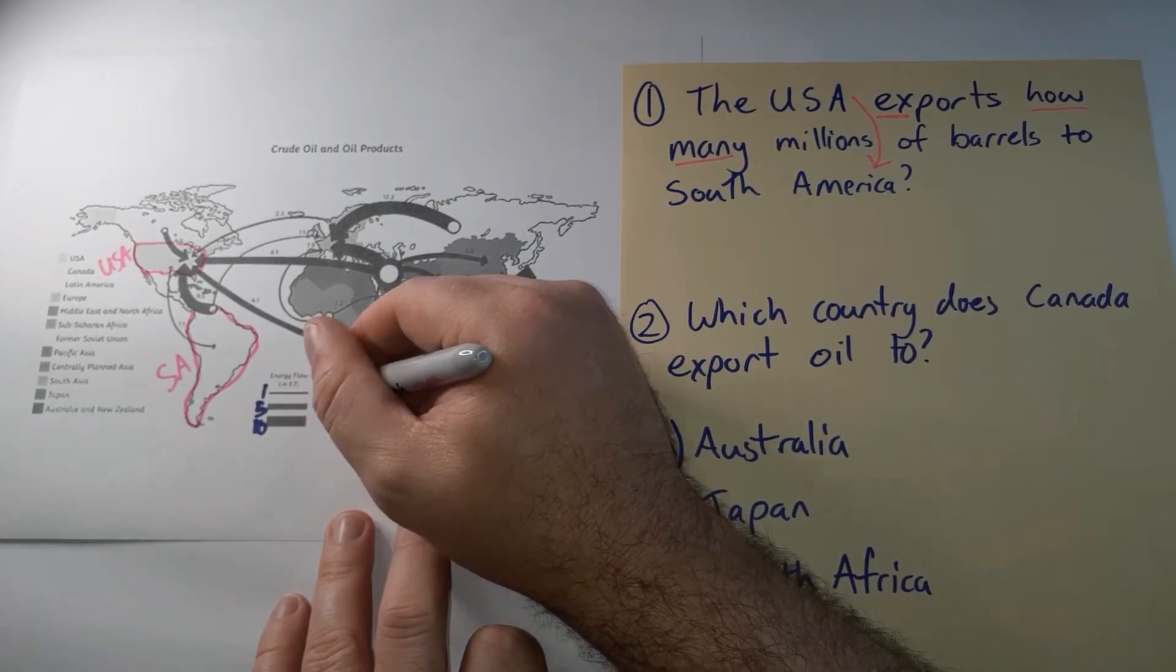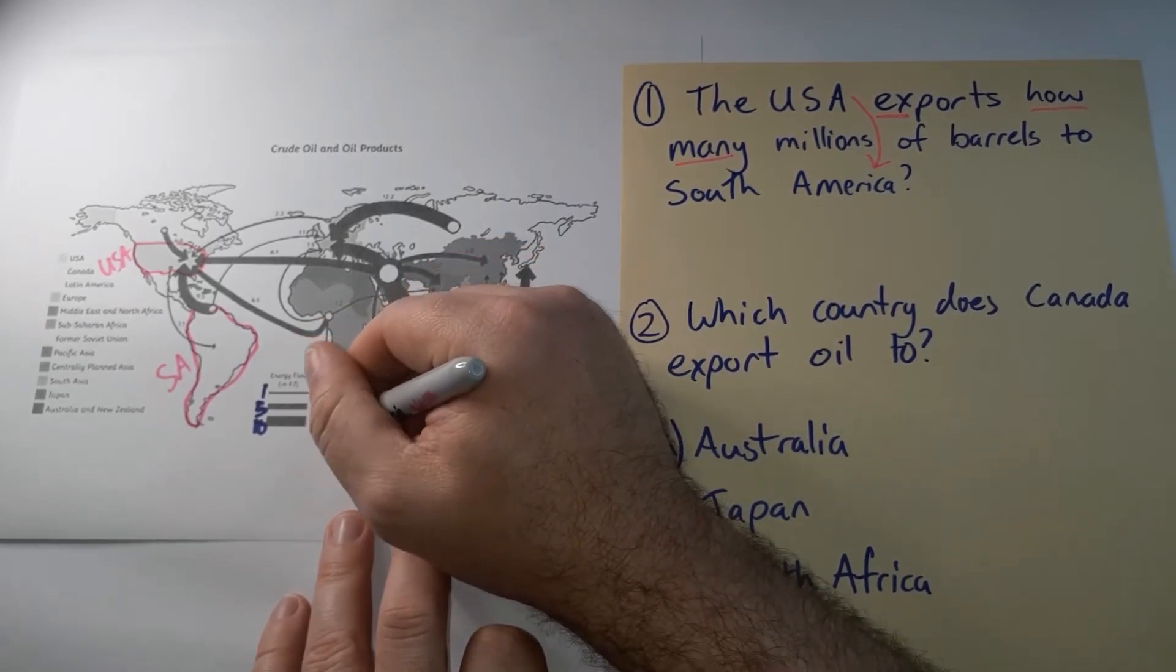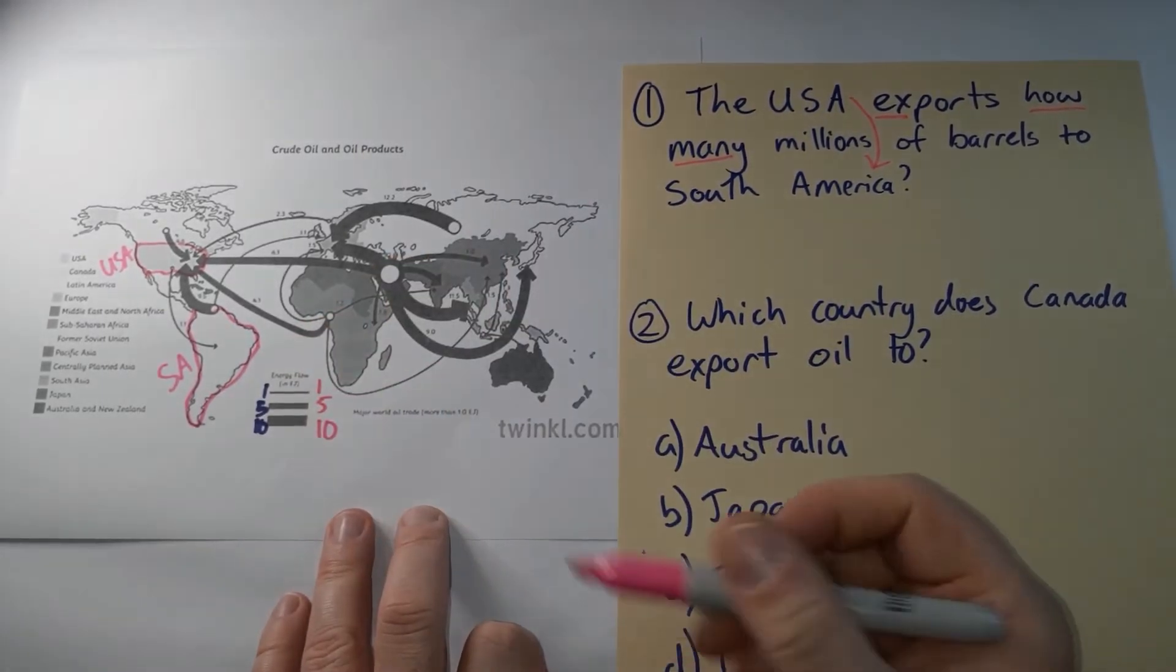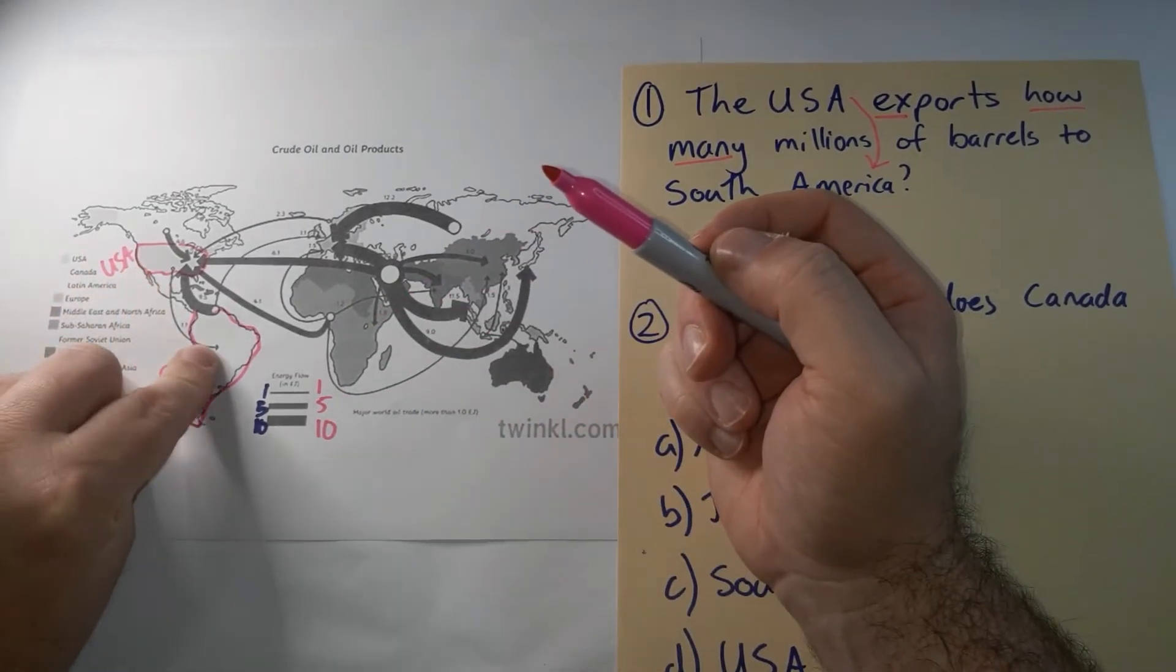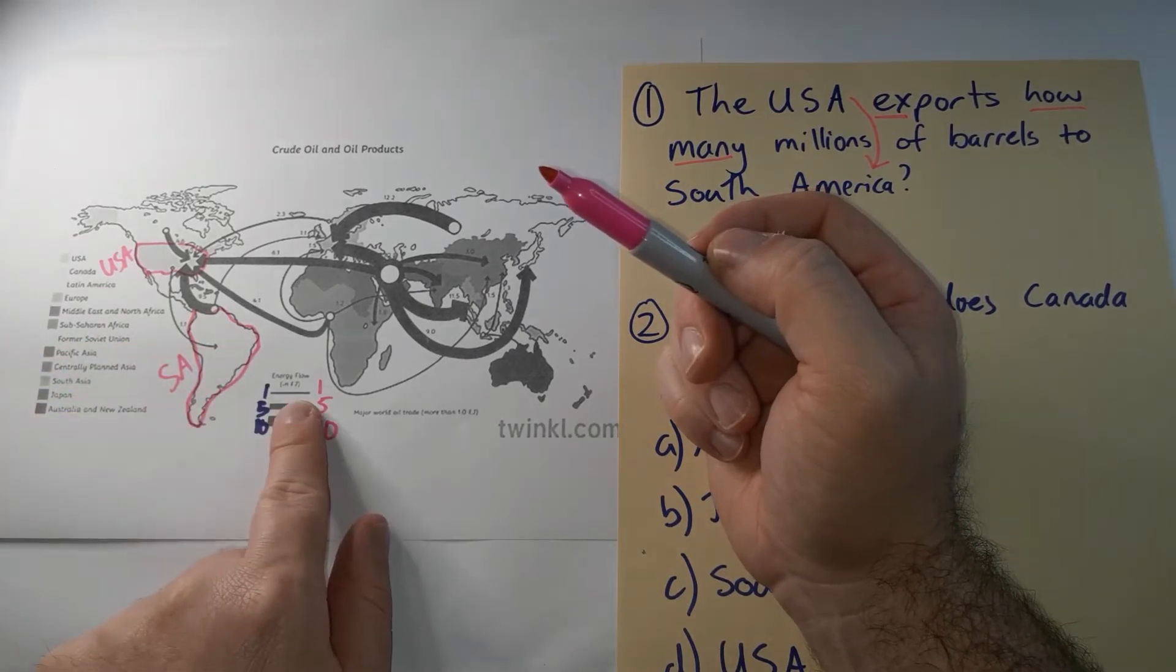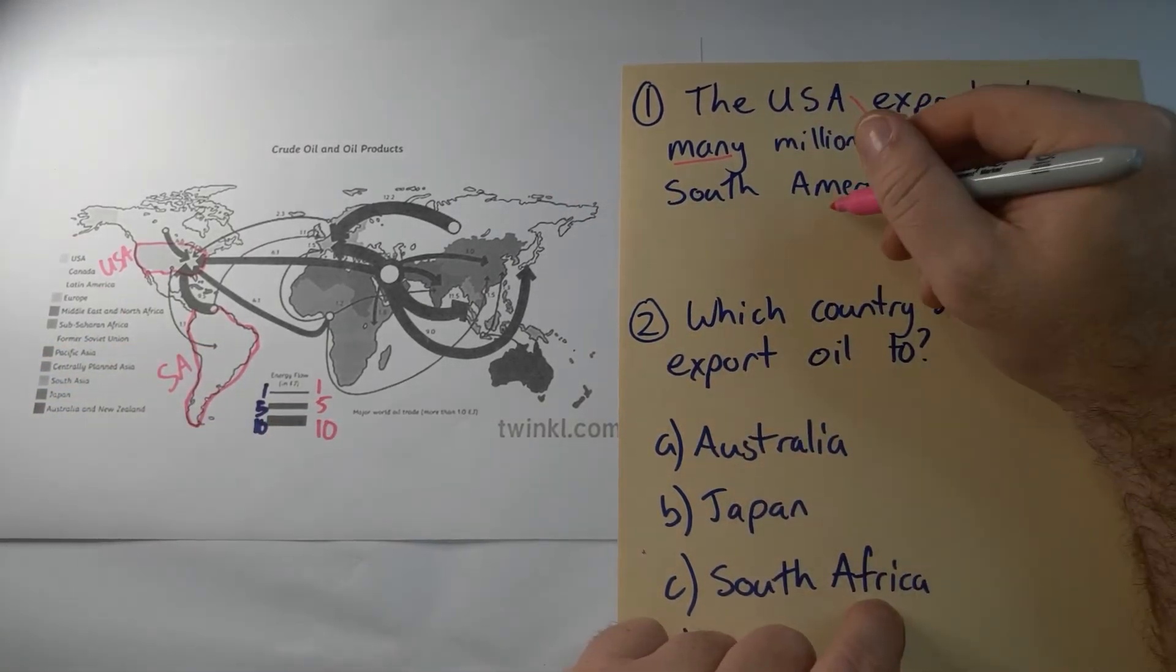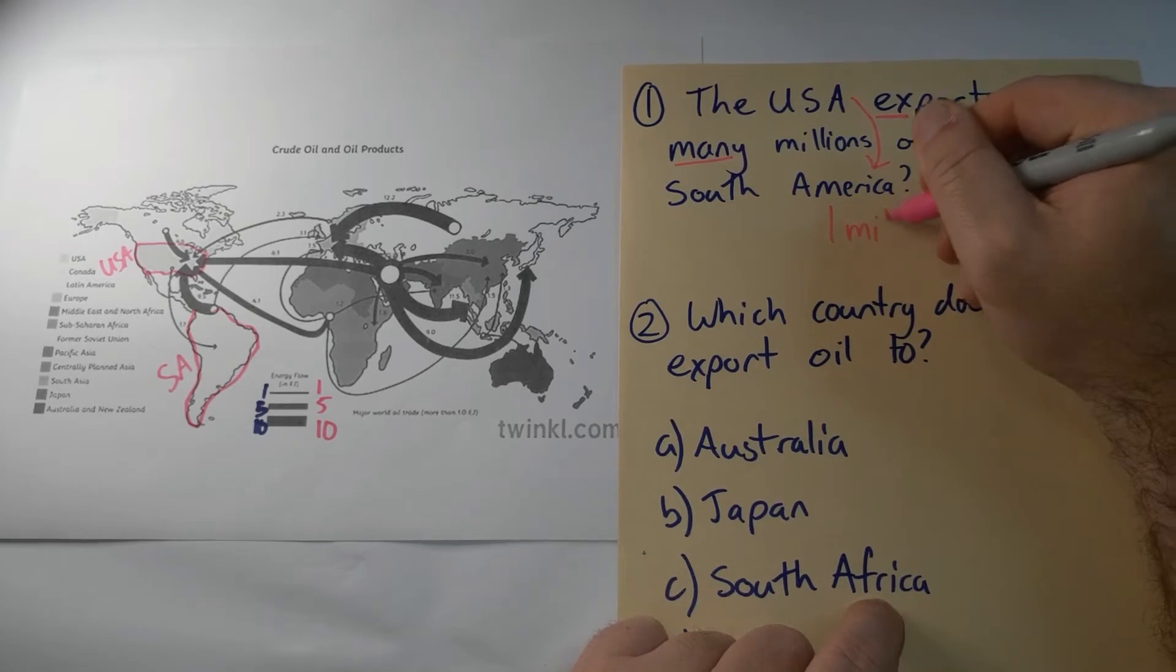The mid thickness is five million barrels and then ten million barrels. So which of these three is closest to the width of this arrow? It's probably the one million barrel. So that's going to be my answer. One million.